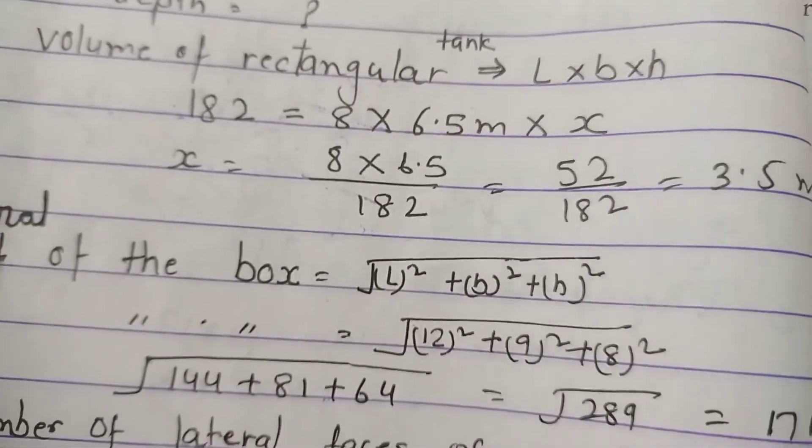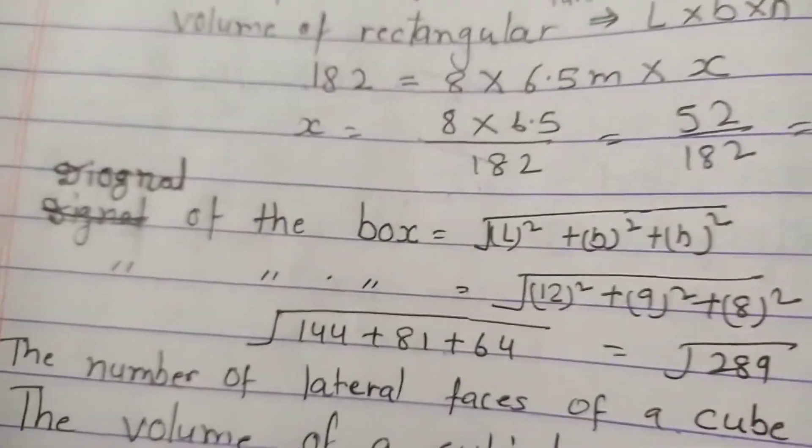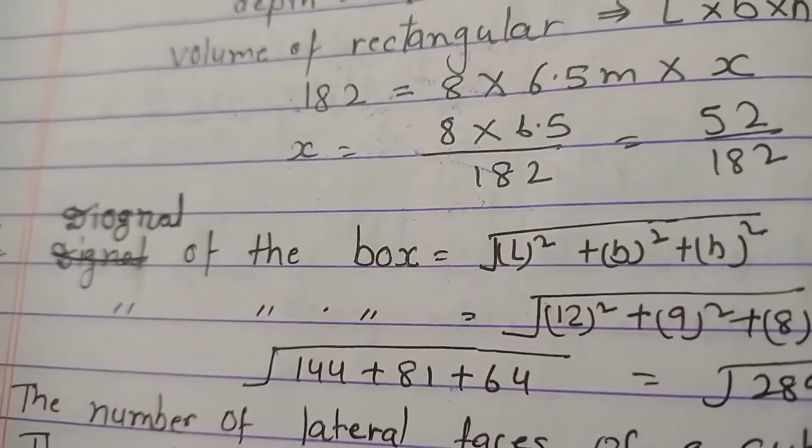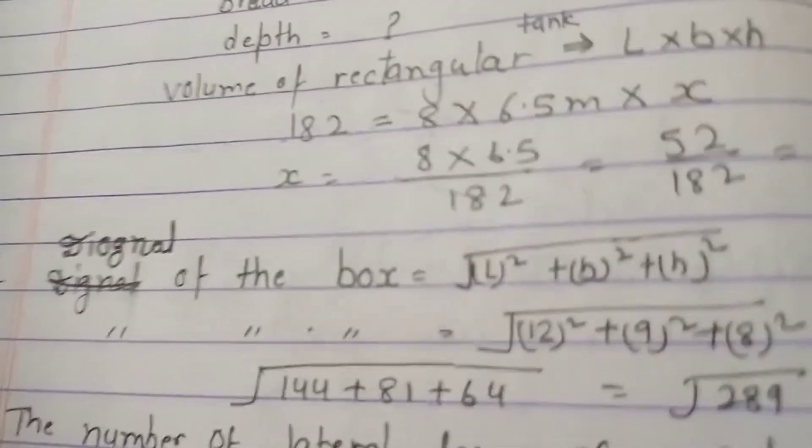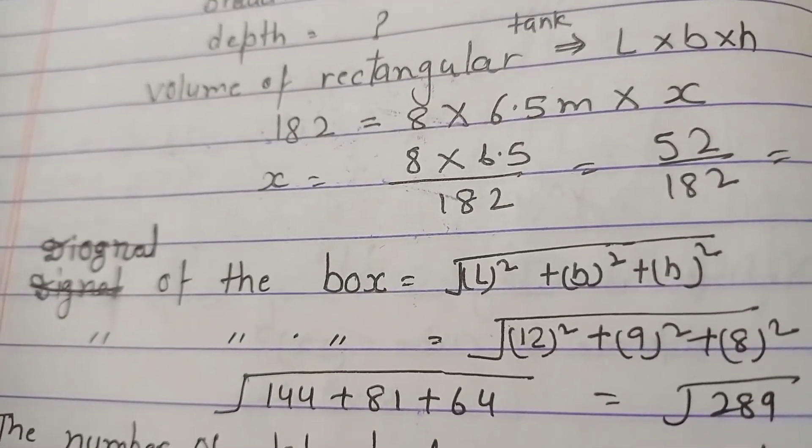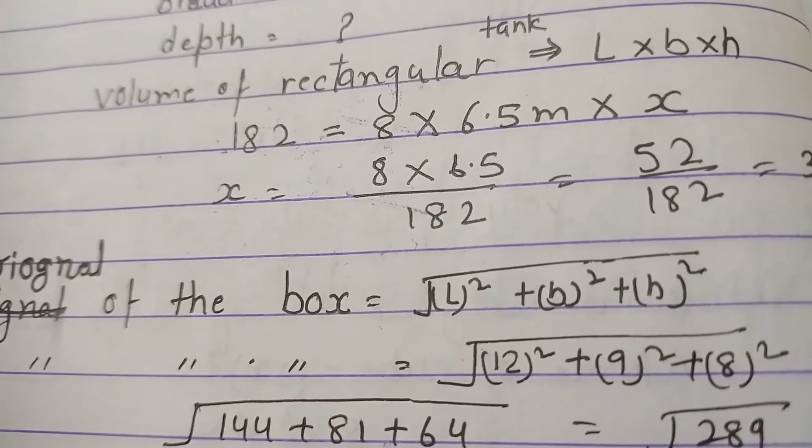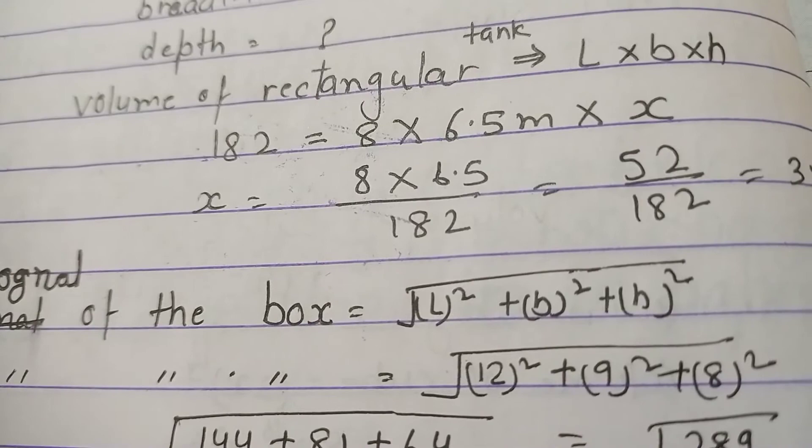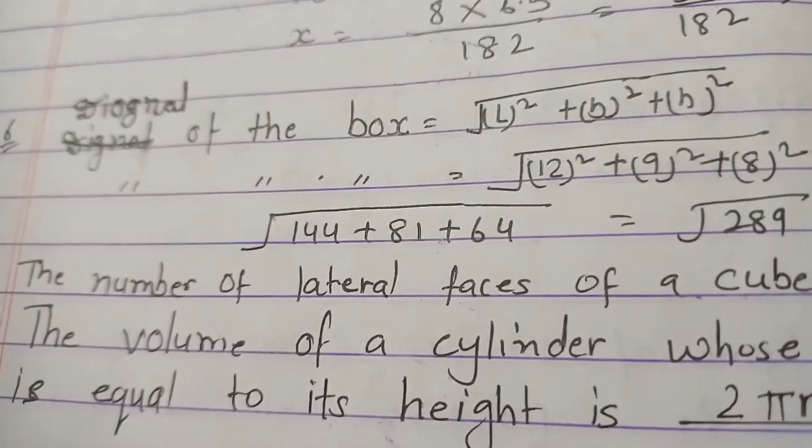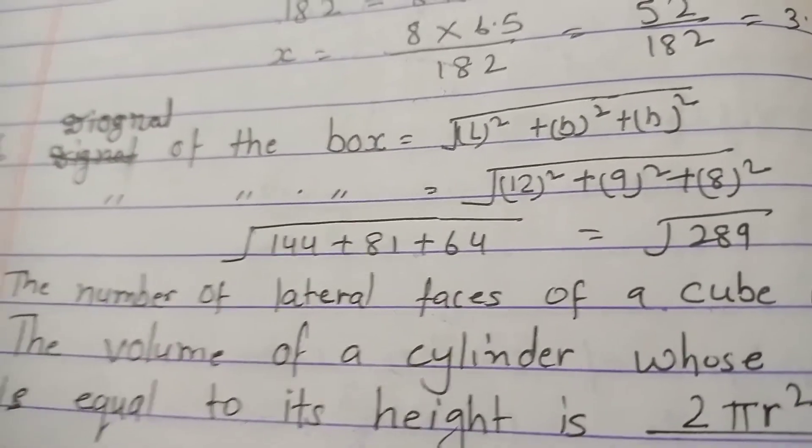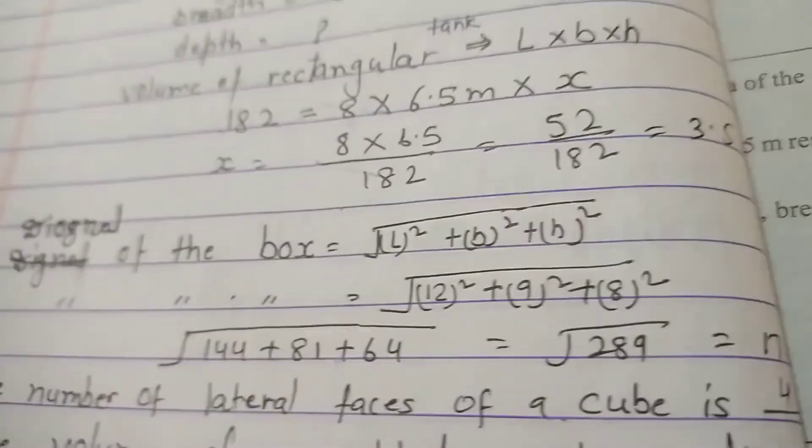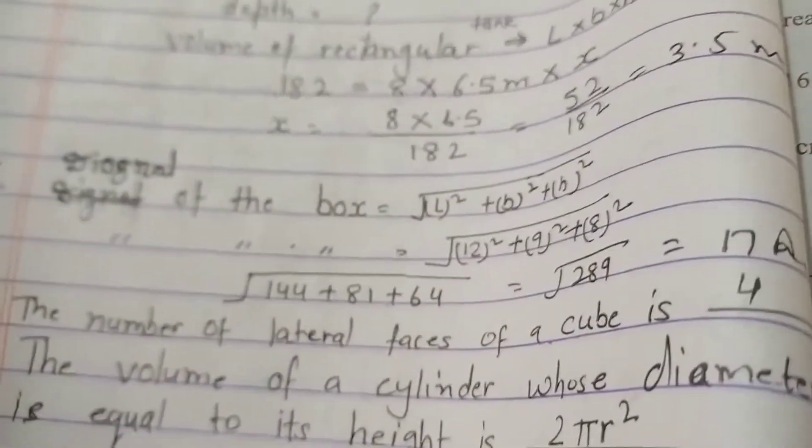Diagonal of the box: we have to find the root of (length² + breadth² + height²). So √(12² + 9² + 8²) = √(144 + 81 + 64) = √289 = 17.